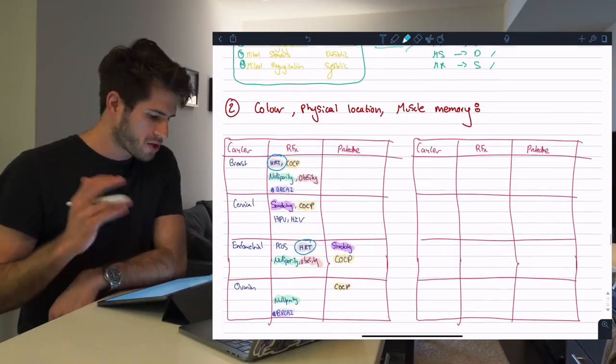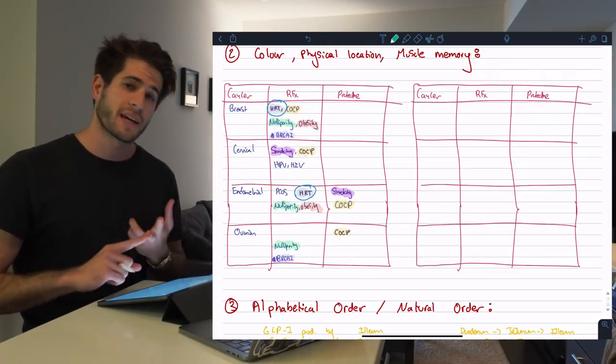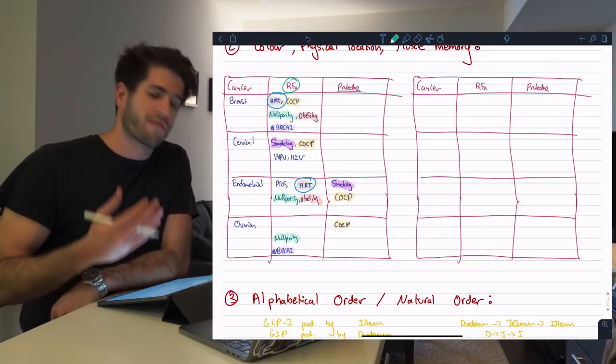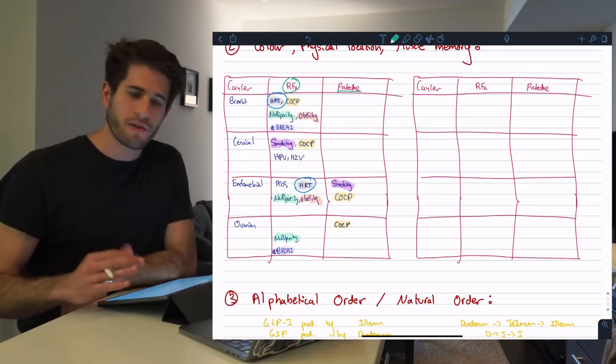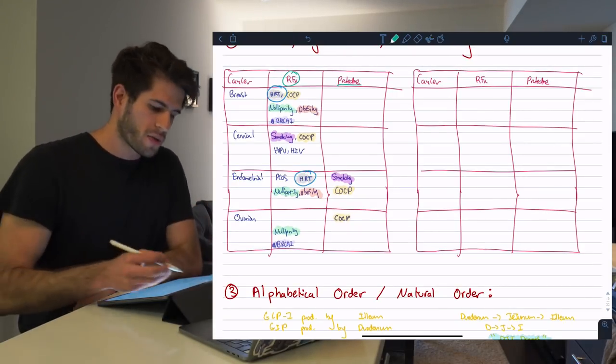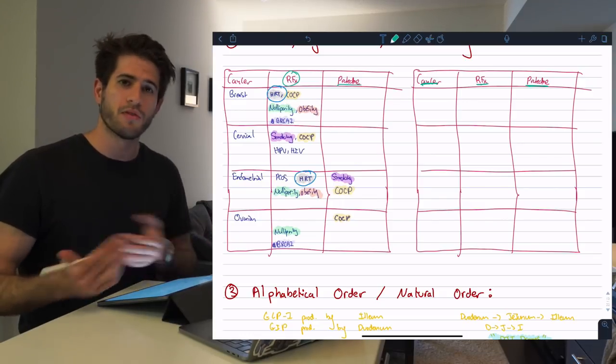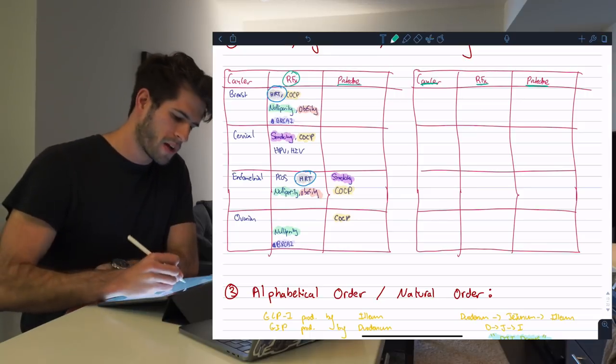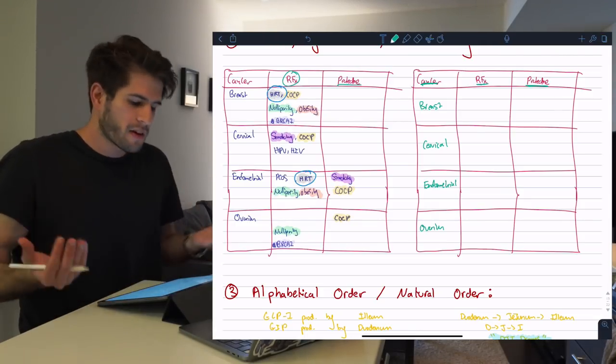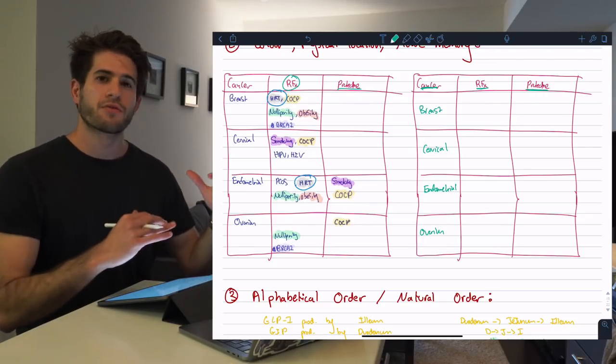The second tip is talking about color, physical location and muscle memory. This table contains four different types of cancer and their different risk factors and protective factors. RF stands for risk factors and protective is for protective factors. You'll see the same factors are repeated for different types of cancers and they can be either risk factors or protective. That was getting me confused so I thought I would make this table and memorize it. The first thing I wanted to do was generate my table structure. Then I needed to remember the cancers in a way that was easy, so I put them in alphabetical order: breast cancer, cervical, endometrial and then ovarian.